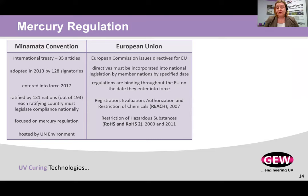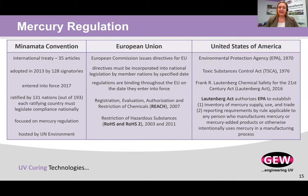In the European Union, the European Commission issues directives that the member nations then have to legislate at a national level. The regulations are binding and always specify a date in which they enter into force. The directives most commonly dealing with mercury are REACH as well as RoHS. In the US, Congress has given the EPA full authority to regulate toxic substances, including mercury. This was updated in 2016 with the Lautenberg Act — effectively, all the EPA has to do is publish a rule in the federal register and that rule becomes binding law.